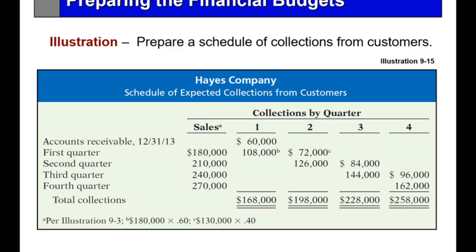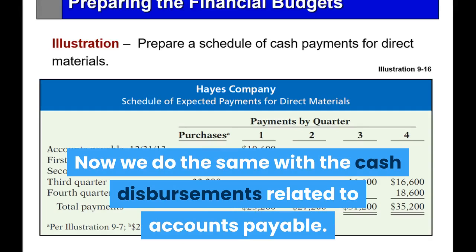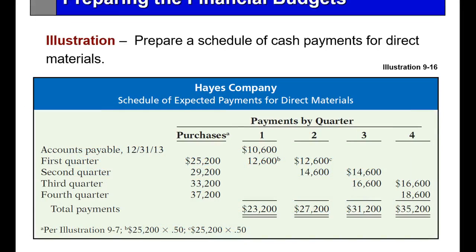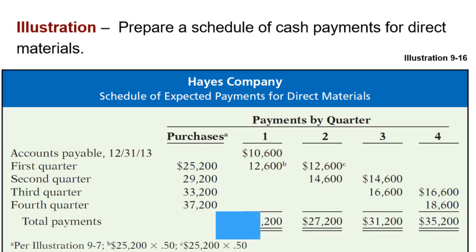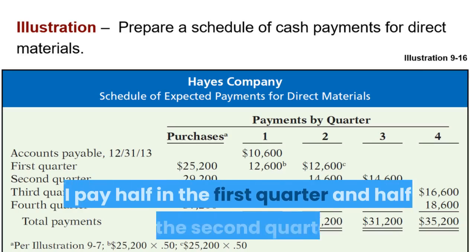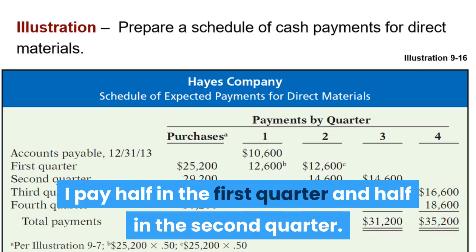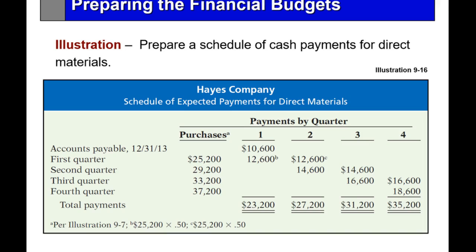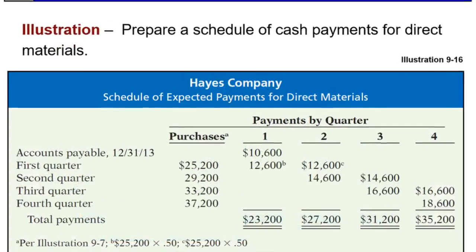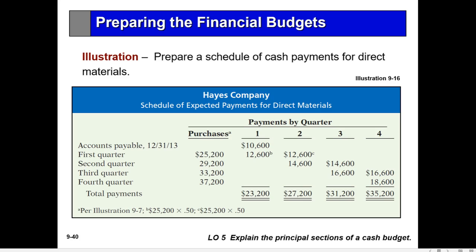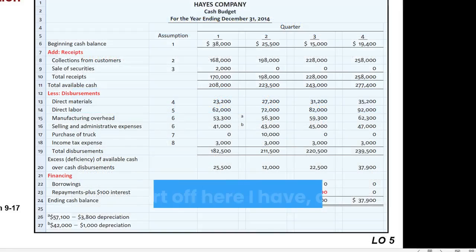I do the same with cash disbursements related to accounts payable. I have accounts payable of $10,000. My direct material budget shows purchases in the first quarter of $25,200. I pay half in the first quarter and half in the second quarter, so total payments in quarter one are $23,200. In the second quarter I pay the other half of the first quarter and half of the second quarter. In the third quarter I get half of the second and half of the third, and so on — that gives me my cash out for purchases of direct material.